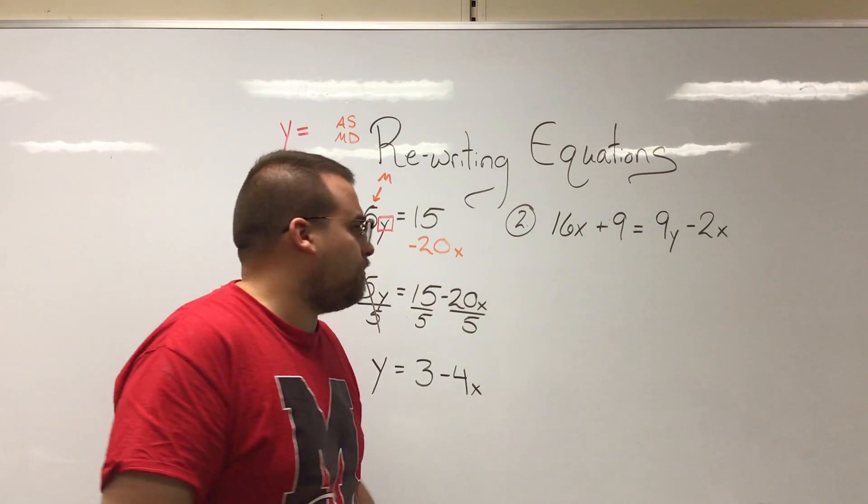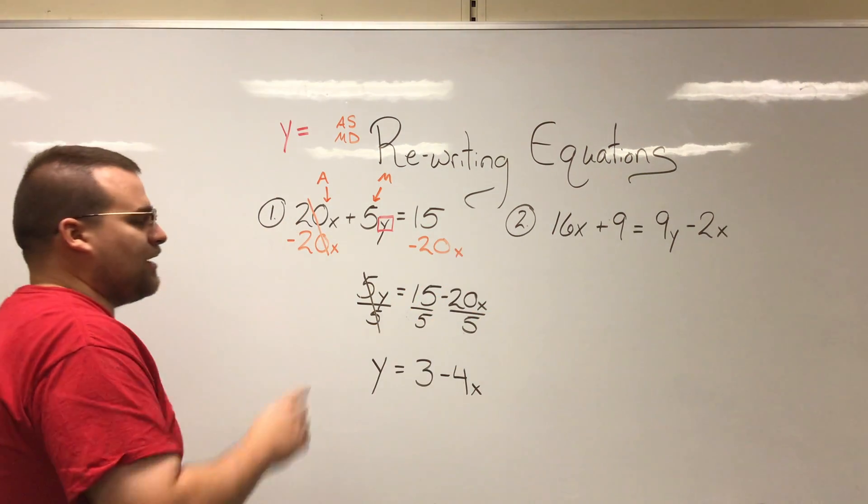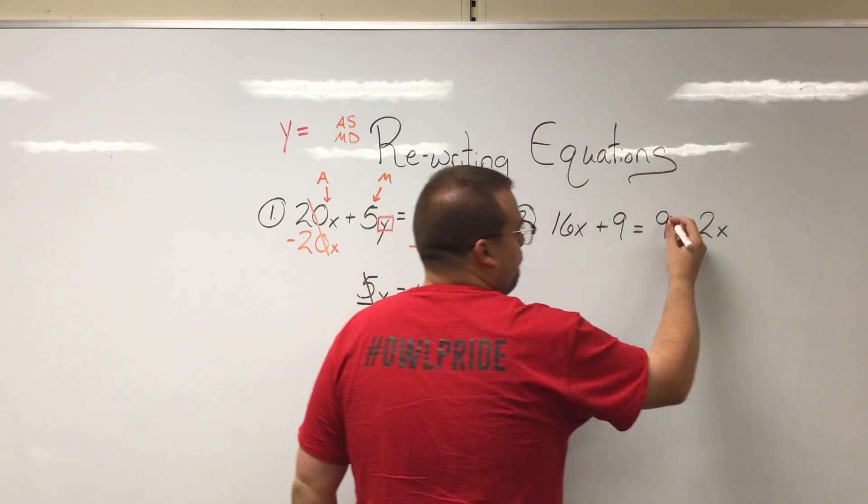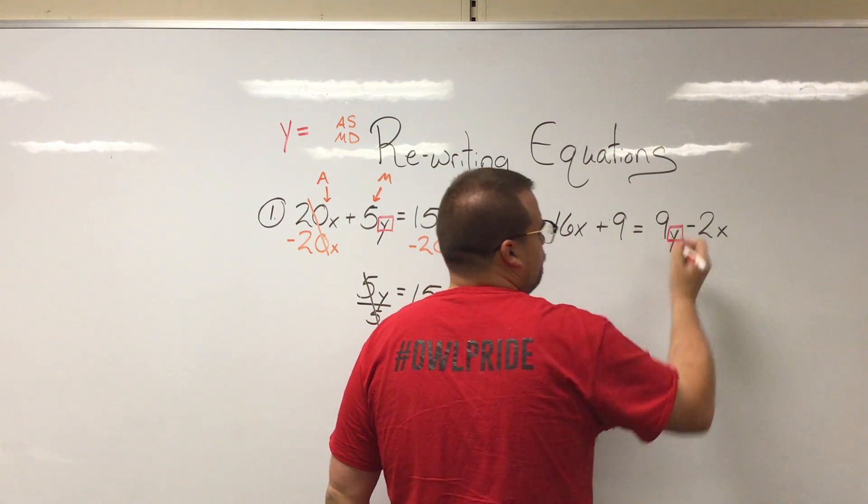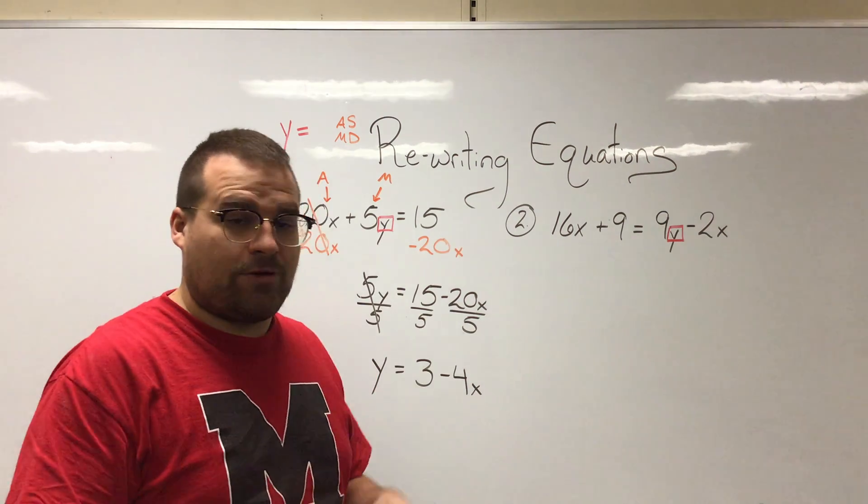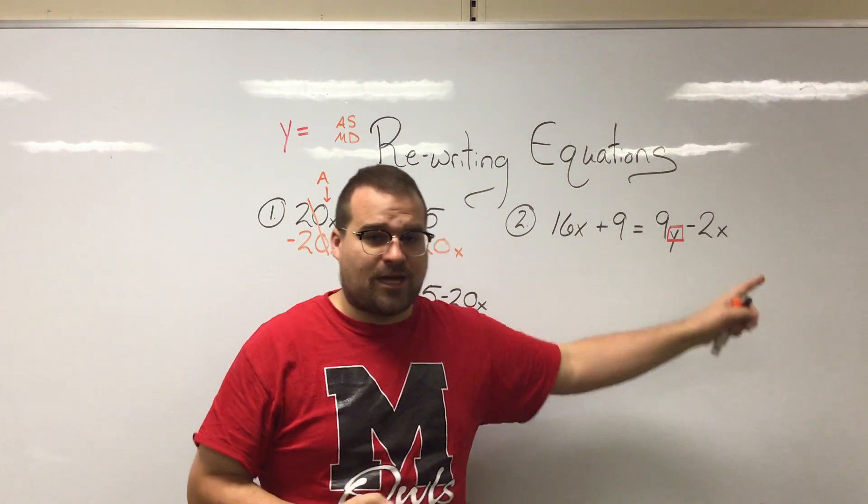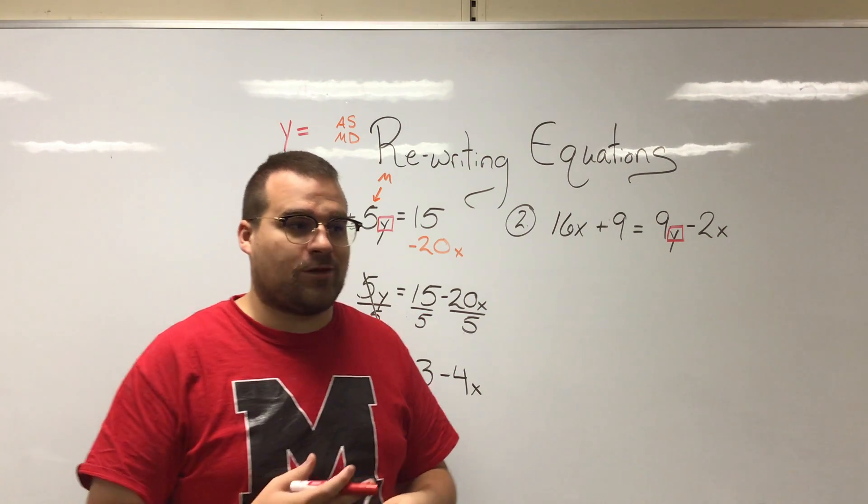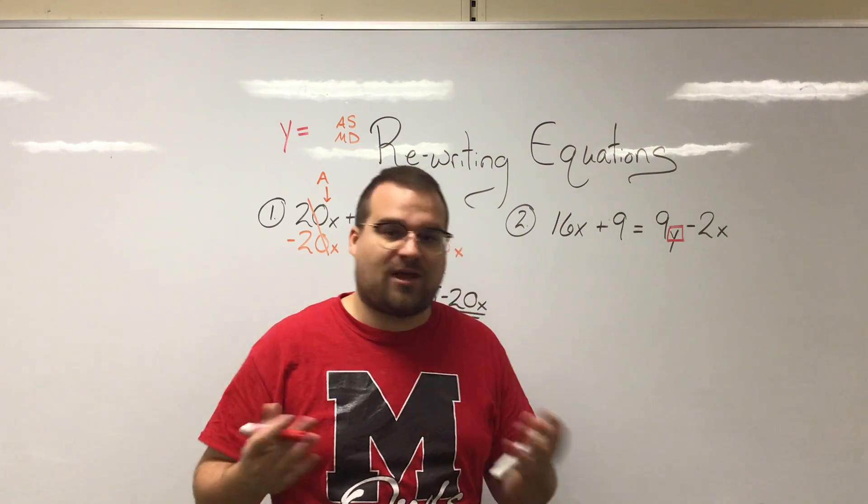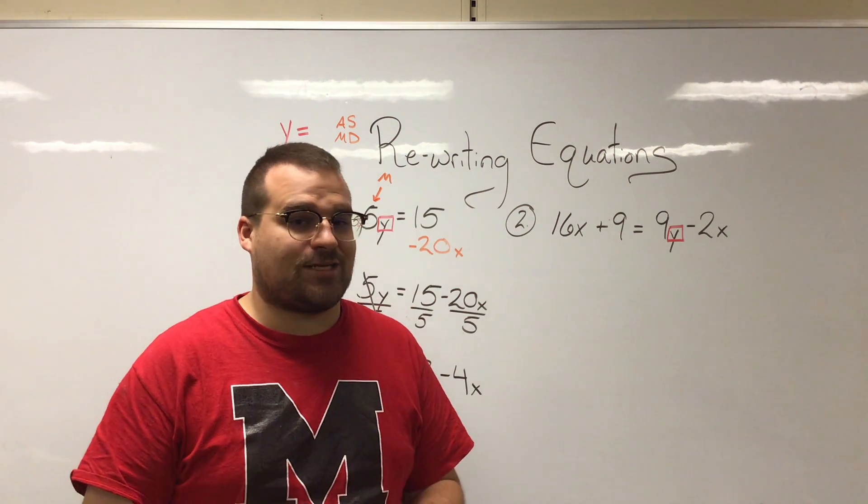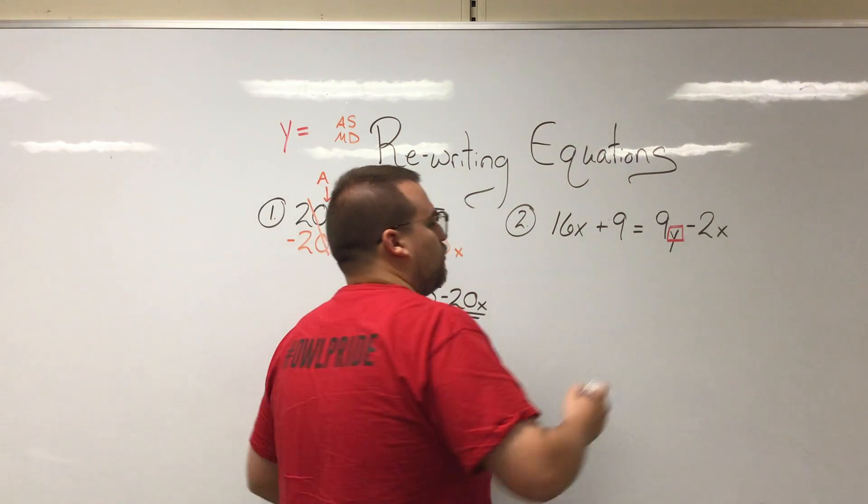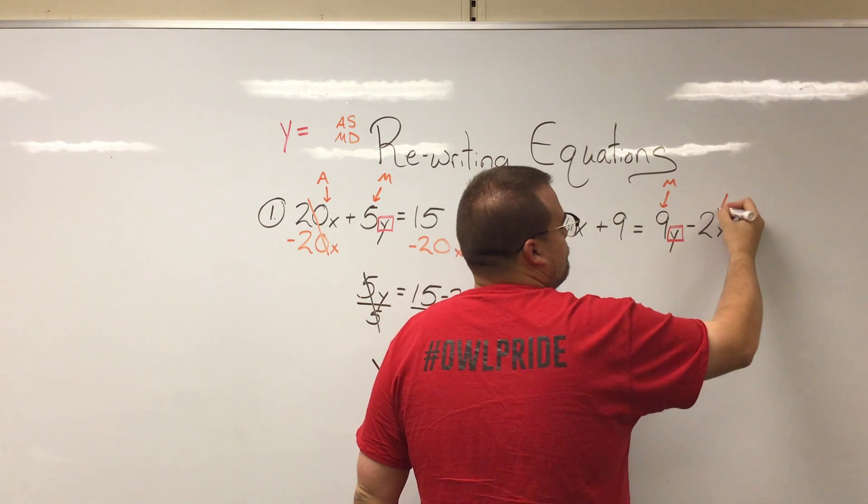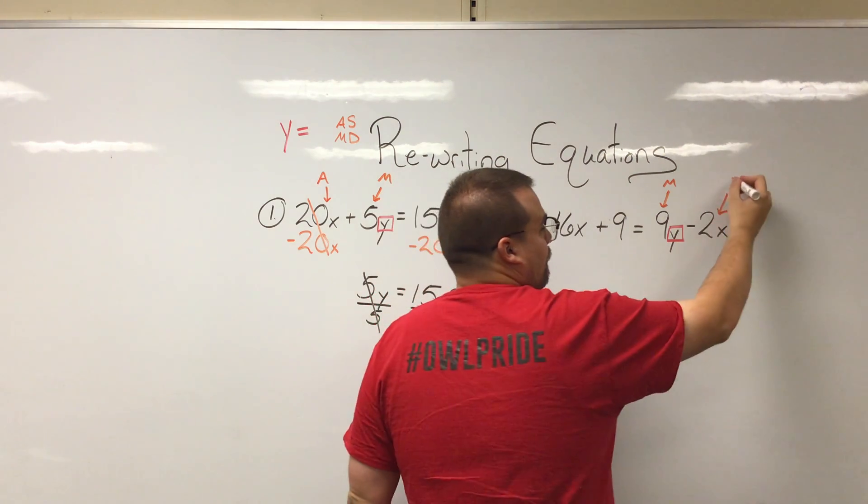Let's take a look at this second example. 16x plus 9 equals 9y minus 2x. So yet again I want to get my y on its own and I want to see what's around it. Now it's on the other side of the equation, it's on the right side of the equation. That's okay. It doesn't ever matter whether our variables or numbers are on the left or right side. It all solves the exact same. So we have a 9 in front of it. It is multiplying, and we have this 2x subtracting from it.